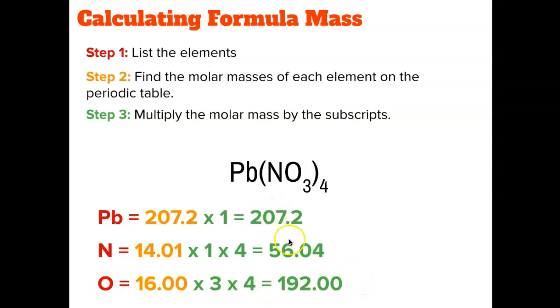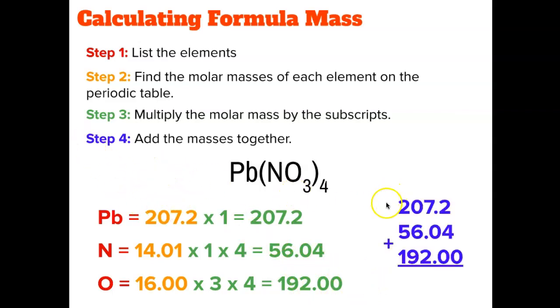I'm going to simply add all of these masses together to get my total mass. Step 4 is add them all together. So 207.2, 56.04, and 192 added together. My total formula mass for this whole thing is 355.24 grams per mole. And that is how you calculate a formula mass.